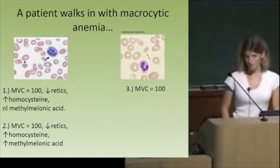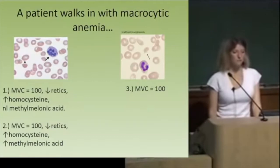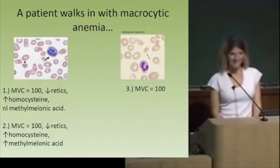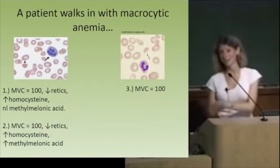With B12 deficiency they might also give you neurologic symptoms. If the MCV is high and you see an acanthocyte on the smear, that's liver disease. Liver disease is another cause of macrocytic anemia, and acanthocytes on a smear help us identify it.